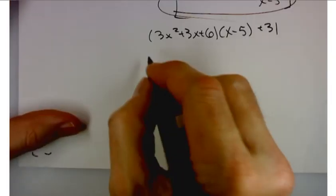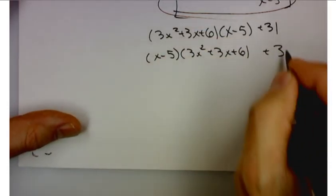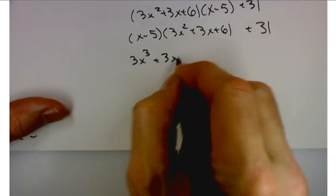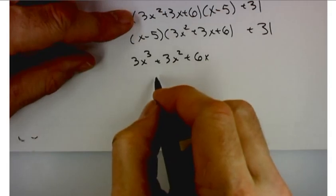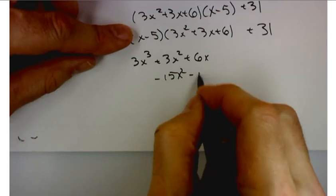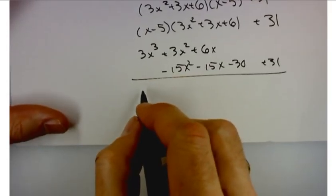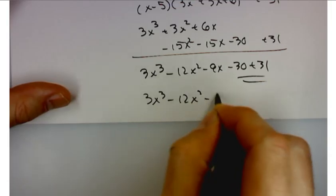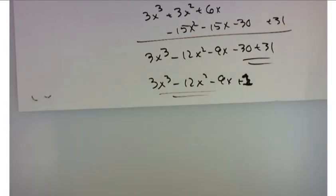Let me just show that: 3x² plus 3x plus 6 times x minus 5, and then I'll add the 31. The trick is to write like terms. Distributing the x gives those terms; distributing the 5 gives minus 15x² minus 15x minus 30, and then plus 31. Combining like terms gives 3x³ minus 12x² minus 9x minus 30 plus 31 — and those are like terms — giving plus 1. That's what we divided into originally, so it checks out perfectly.